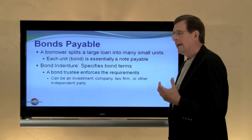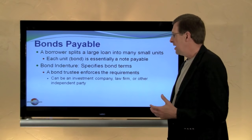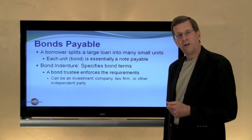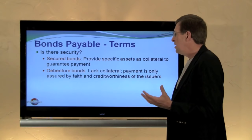Some terminology: the bond indenture specifies the terms of a bond agreement. It will typically state the interest rate, the frequency of payment, and many other things — such as what happens in the event of default. Typically it will also include the stipulation of a bond trustee, someone who enforces the rights for the bondholders. That might be an investment company, a law firm, or some other independent party.